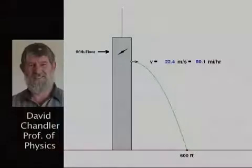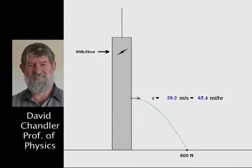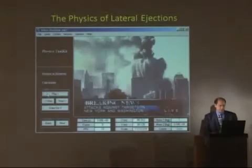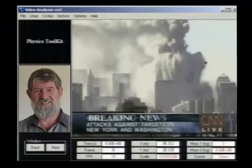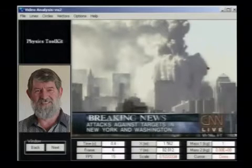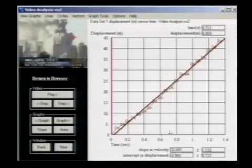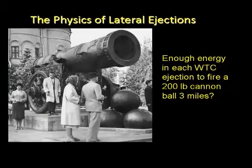Let's take a look at the physics of this. Girders weighing several tons were found 600 feet from the base of the North Tower. How fast they were ejected depends on where they originated. If they came from high in the building, they were thrown outward at about 50 miles per hour; if from lower down, the speed had to be even greater. Gravity alone cannot account for such high lateral ejection speeds. Using special software, we can analyze motion on video clips frame by frame. I've placed markers on each frame to track a particular projectile, and the data shows the object was shot horizontally at over 70 miles per hour. The energy needed to hurl a four-ton girder at this speed is comparable to the energy needed to hurl a 200-pound cannonball three miles.